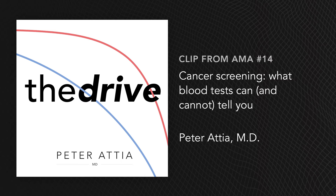Patients often say, 'I had a 23andMe test — doesn't that tell me about my cancer risk since it's a genetic disease?' The answer is basically no. The genetic tests people get from consumer genetic sequencing are germline genes — the genes you inherited. Most cancers do not arise from inherited genes. Only about 5% of cancers come from inherited forms. The majority — at least 95% — result from somatic mutations, which are mutations that occur to your genes and are not necessarily passed on.